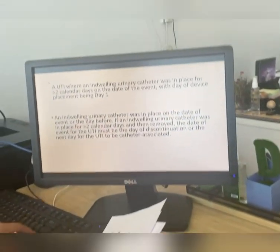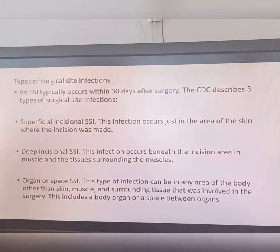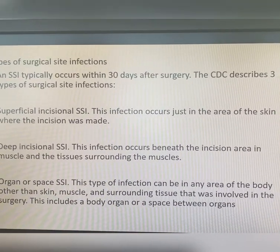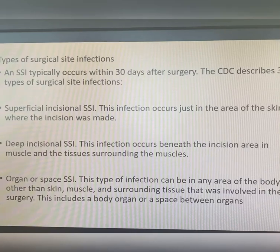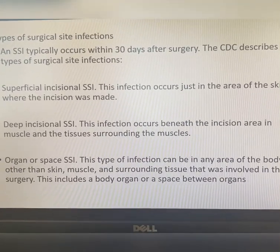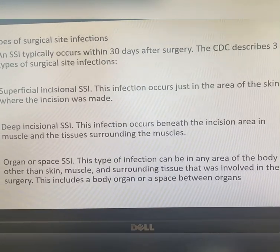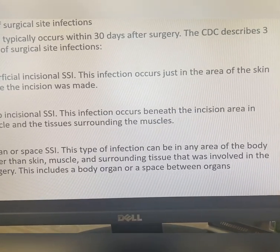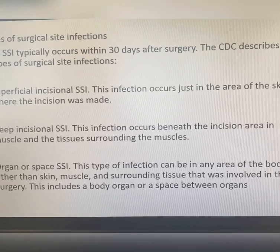The last one is SSI — Surgical Site Infection. SSI typically occurs within 30 days after surgery. The CDC describes three types: number one is superficial incisional SSI, which occurs just in the area of the skin where the incision was made. Number two is deep incisional SSI, which occurs beneath the incision area in muscle and surrounding tissue. Number three is organ or space SSI, which can occur in any area of the body other than skin and muscle that was involved in the surgery, including a body organ or a space between organs.